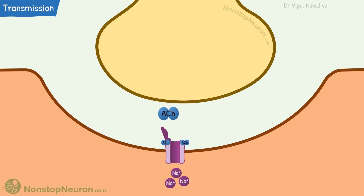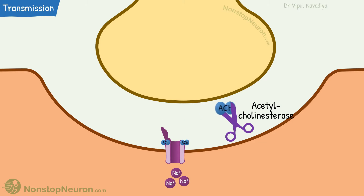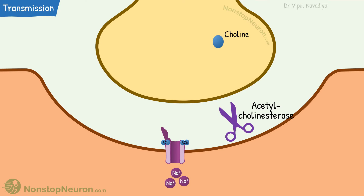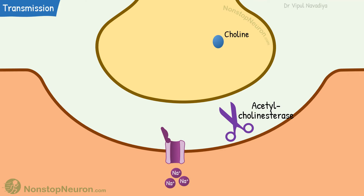The action of acetylcholine is terminated by two mechanisms. One is the acetylcholinesterase enzyme. It cuts the acetylcholine molecule into acetate and choline. The choline is transported back into the nerve terminal and reutilized for synthesis of acetylcholine. The second mechanism is the diffusion of acetylcholine out of the synaptic cleft. Termination of the action prevents continued excitation of the receptors, so the muscle relaxes.